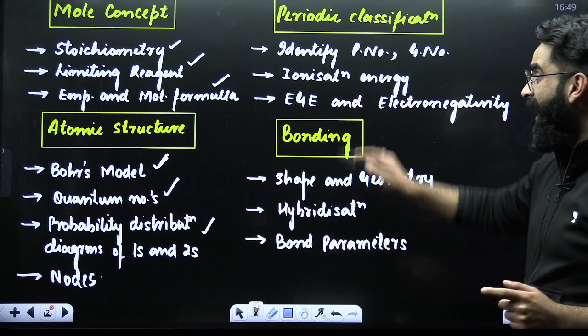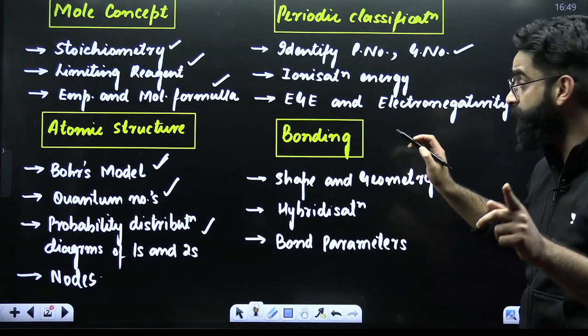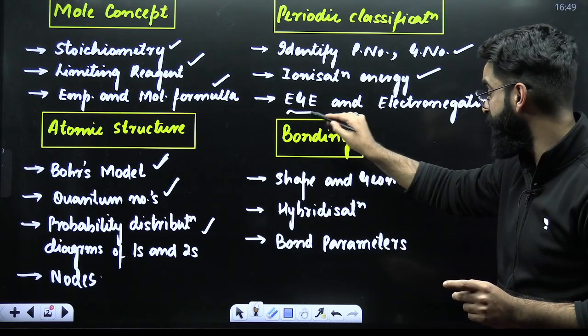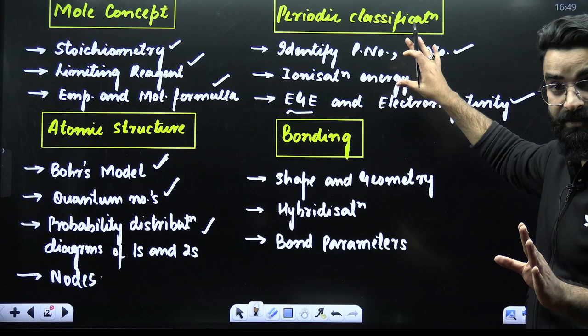Then comes your periodic classification. Identification of the period number and group number. Questions have been asked, will be asked too. Ionization energy, again, one of the important topics. Electron gain enthalpy. Electronegativity. Some sure-shot topics from the chapter periodic classification.